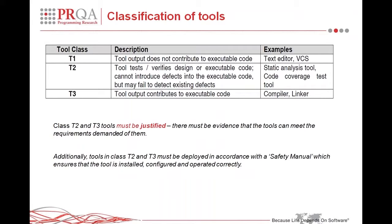EN 50128 doesn't specify the manner of the justification, but it must satisfy the software requirement specification at the required software safety integrity level — the SIL. Proof of the justification can be provided by tool vendors such as PRQA, with appropriate inspection being carried out by a recognised certification company who has to be independent.